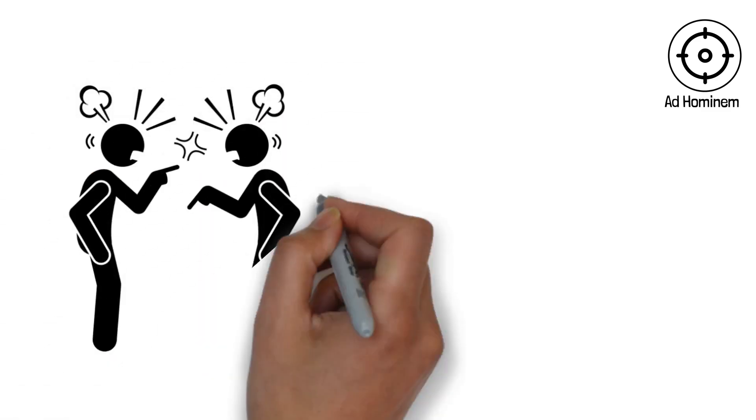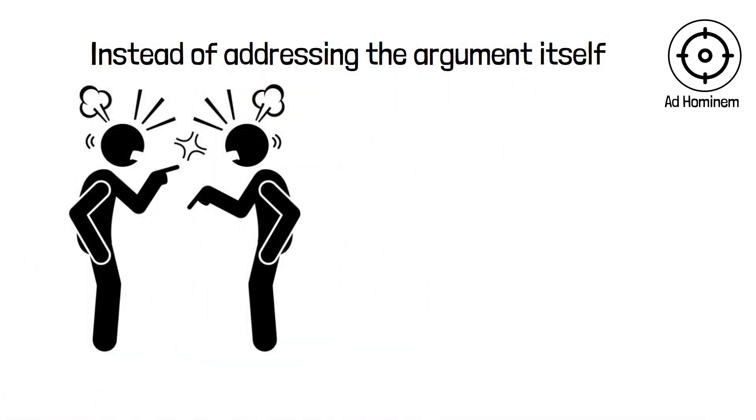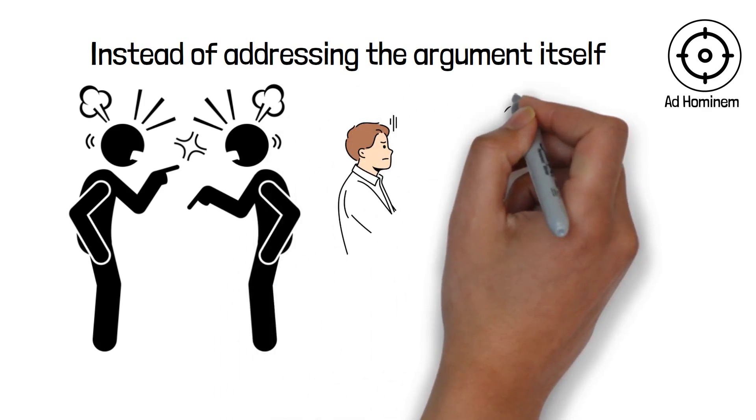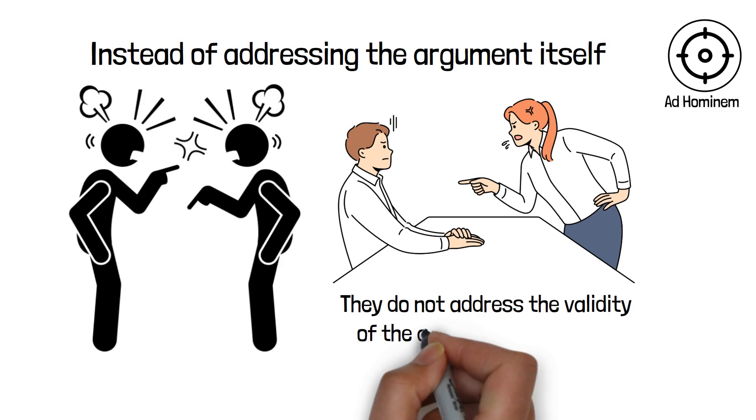This fallacy occurs when someone attacks the person making the argument instead of addressing the argument itself. Instead of providing counter-arguments or evidence, they resort to personal attacks or insults. Ad hominem arguments are fallacious because they do not address the validity of the argument being made.